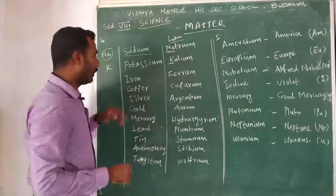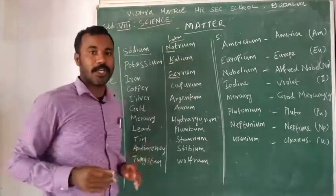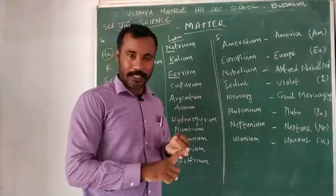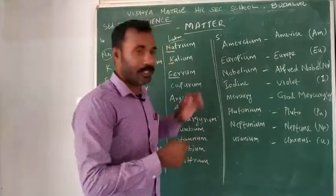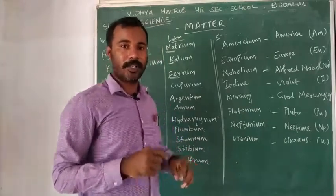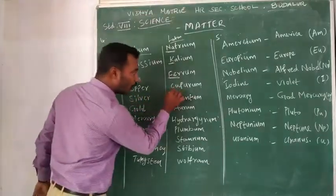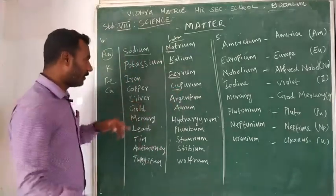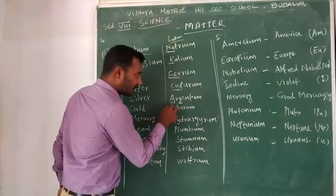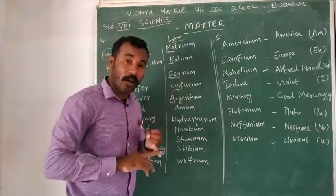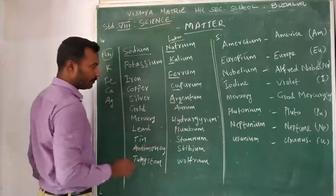Next, potassium — the Latin name is Kalium, symbol K. Next, iron — the Latin name is Ferrum, symbol Fe. Next, copper — the Latin name is Cuprum, symbol Cu. Next, silver — the Latin name is Argentum. Since A and R are already used for arsenic, we use Ag.